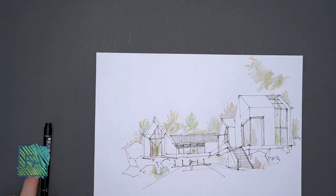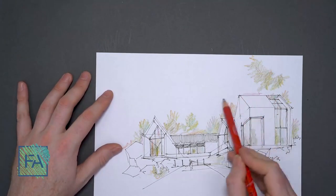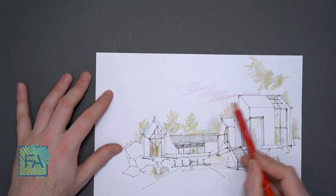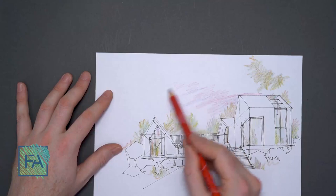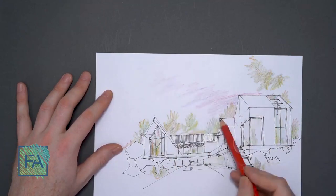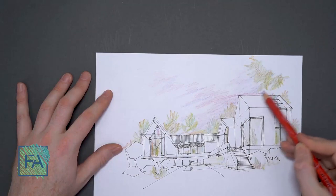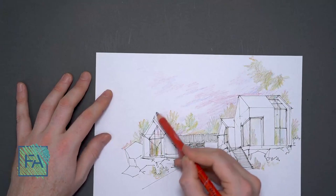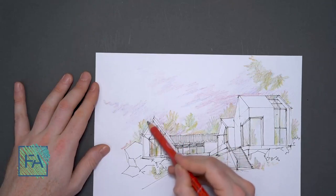We can use another color to add sky, so we have sky also in our sketch. Look how beautiful it gets when we mix blue and red together.